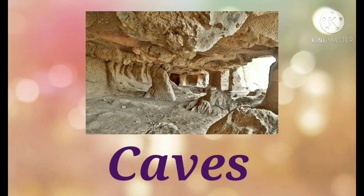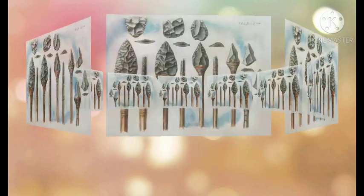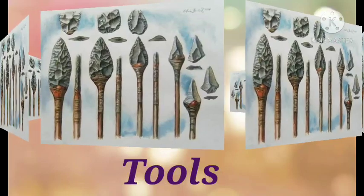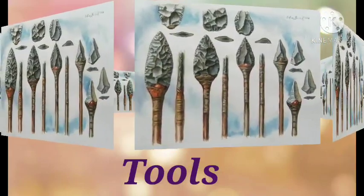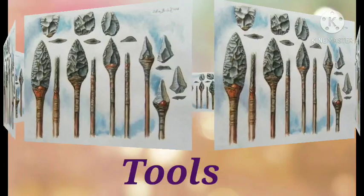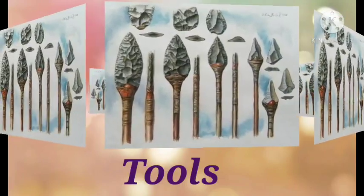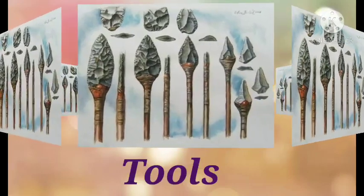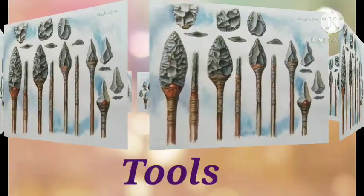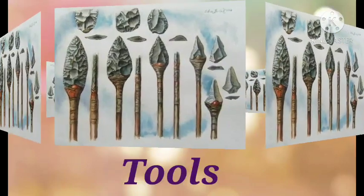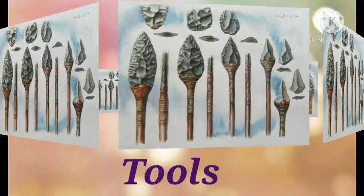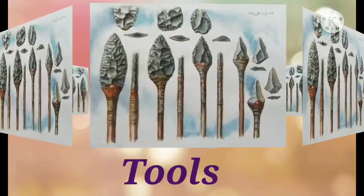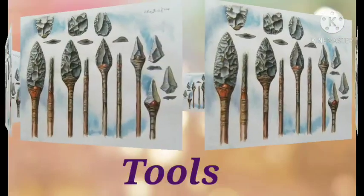Neanderthals primarily lived in caves. They made tools out of big stones as well as from the flakes scraped off from them. Such tools were fixed on a bone or wooden shaft to make weapons like the spear and axe. The Neanderthals hunted big animals. They used scrapers made from stone flakes to scrape meat from the hide of dead animals.